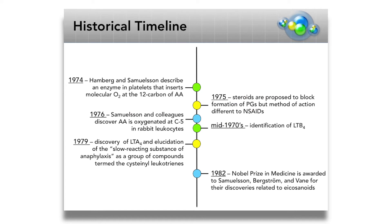In the mid-1970s, at the same time the biology and structure of prostaglandins was being studied, Hamburg and Samuelson described an enzyme in platelets that inserted molecular oxygen at the 12-carbon of arachidonic acid. This type of enzyme was termed a lipoxygenase. In 1975, steroids were proposed to block formation of prostaglandins, but the method of action was different than that of NSAIDs. These hints led to the discovery that there were multiple enzymes that could oxidize arachidonic acid to other compounds. In 1976, Samuelson and colleagues discovered that arachidonic acid can be oxygenated at carbon-5 in rabbit leukocytes, and they went on to discover that this oxygenated product at carbon-5 can be transformed to a compound they termed leukotriene B4.